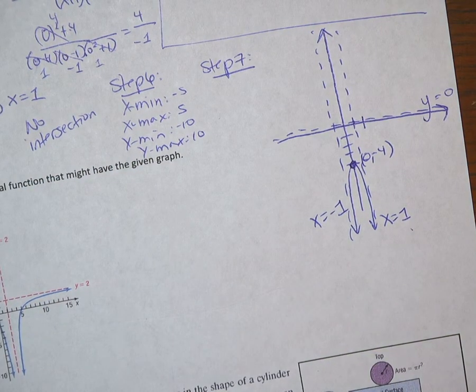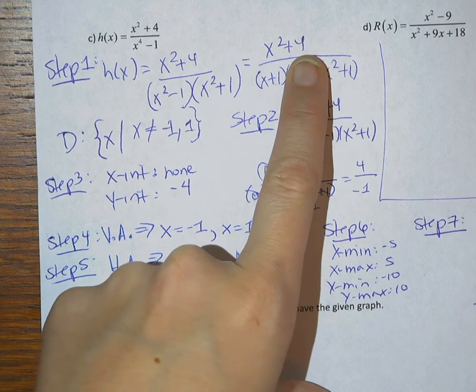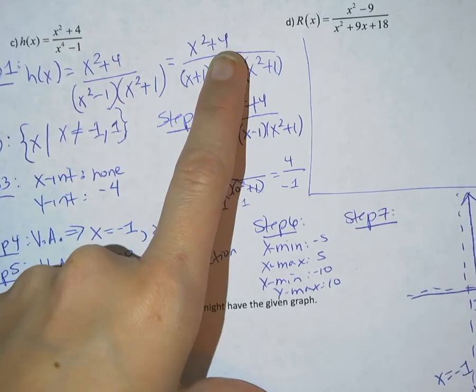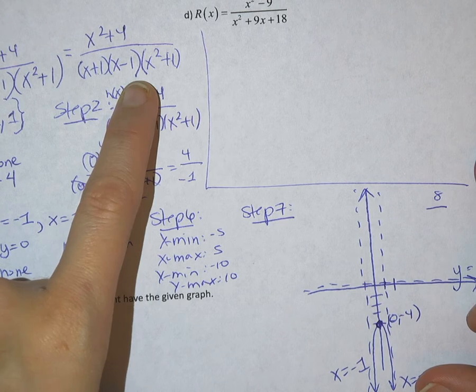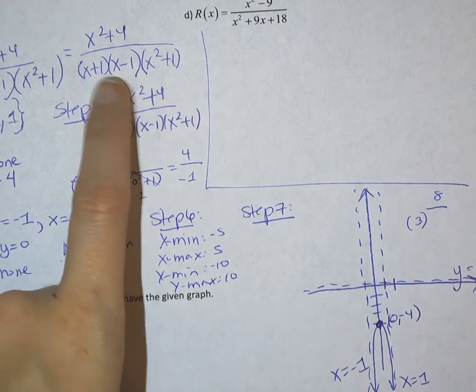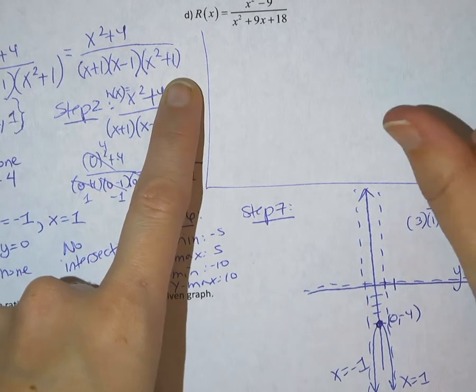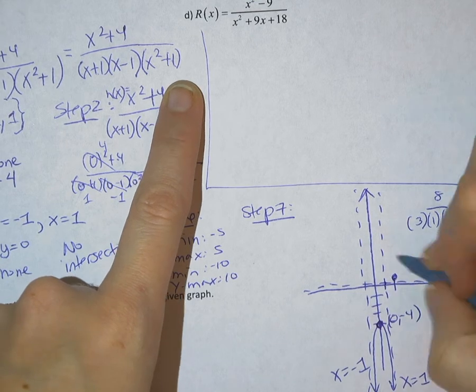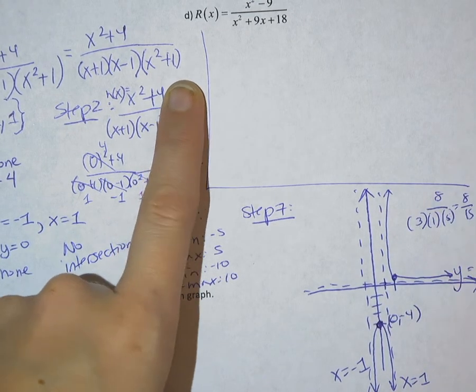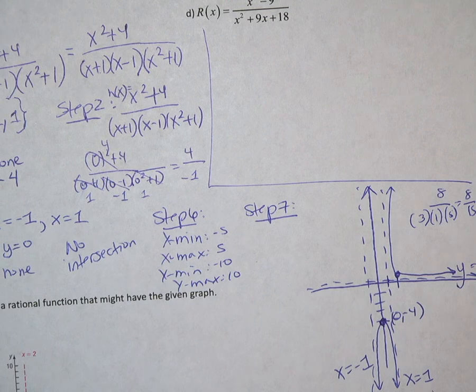If I look back at my function, 2 squared plus 4 is going to give me 4 plus 4, which is 8, over 2 plus 1 is 3, times 2 minus 1 is 1, times 2 squared, 4 plus 1 is 5, gives me 8 over 15, positive. So I know I'm somewhere up here, so I know I can graph this side above. I can't cross either of those asymptotes, so it should slope towards those asymptotes.